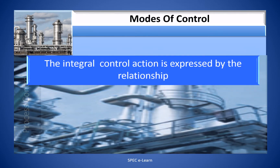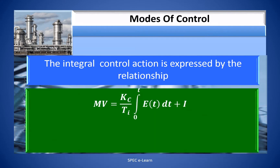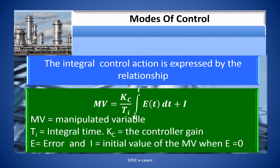The integral control action is expressed by the relationship: MV = (Kc / Ti) × integral from 0 to t of e(t) dt + i, where MV is the manipulated variable, Ti the integral time, Kc the controller gain, e is the error, and i the initial value of MV when e is equal to zero.